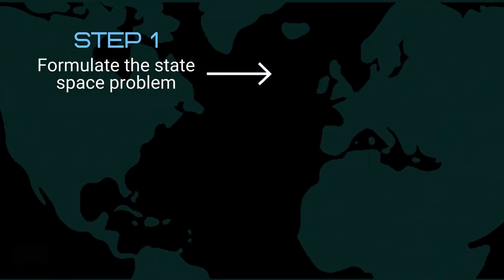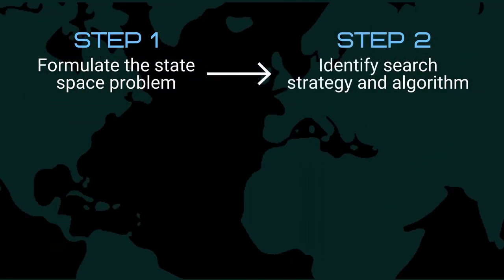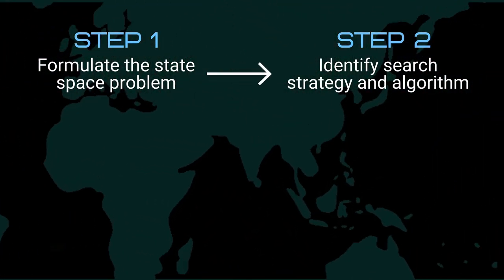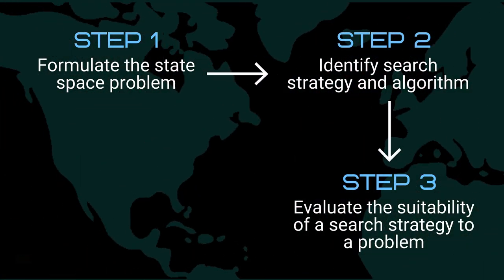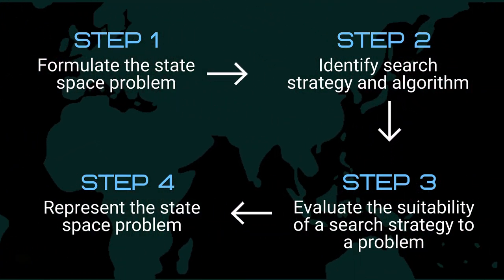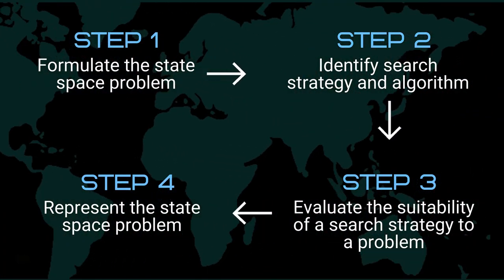Step 1 is to formulate the state-space problem. Step 2 is to identify search strategy and algorithm. Step 3 is to evaluate the suitability of a search strategy to a problem. And finally, step 4 is to represent the state-space problem.